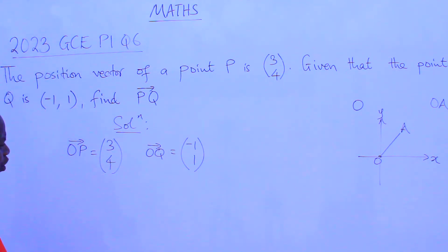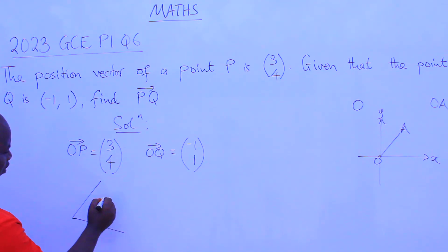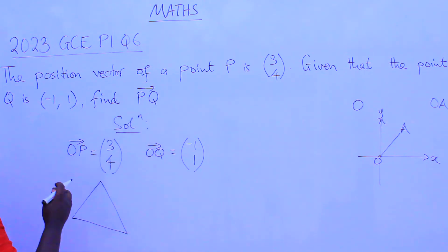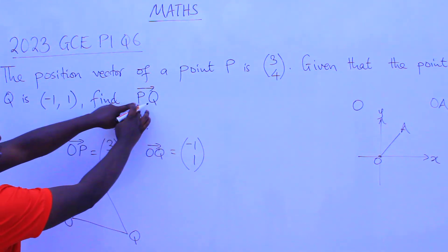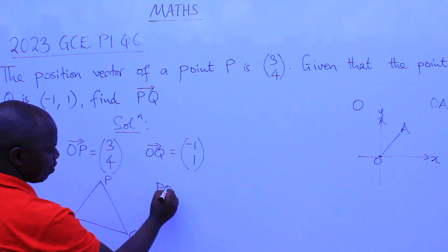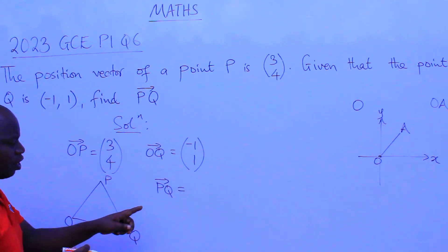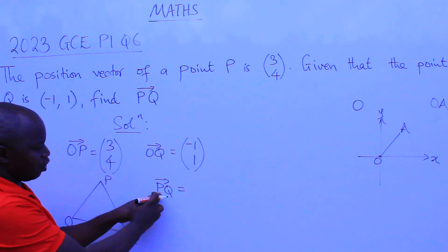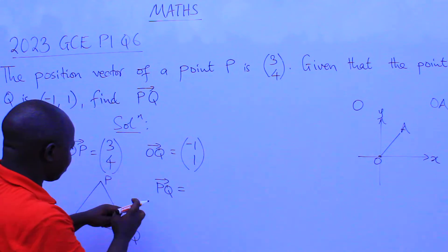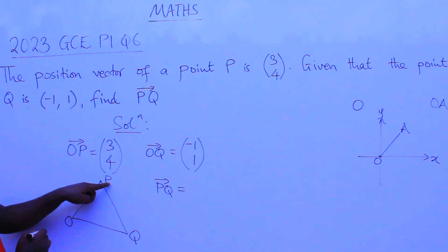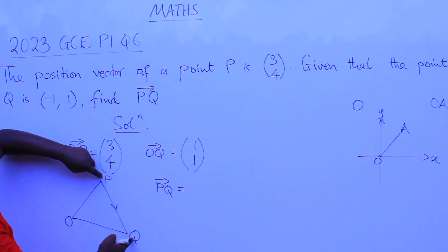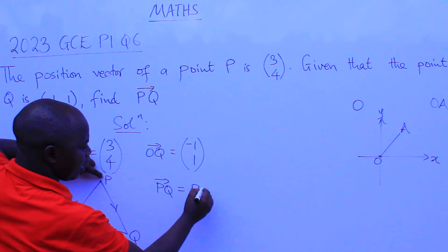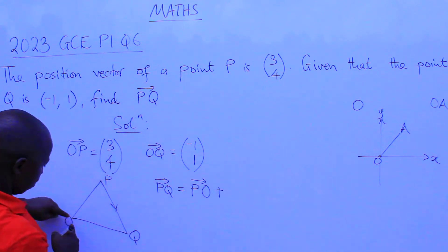The question is to find the vector PQ. Since the vectors are from the origin, they are position vectors. What you need to do is come up with a simple diagram to help you understand PQ. Let's say this is the origin O, we have point P here and point Q here. PQ is like standing on point P wanting to go to point Q. To move from P to Q, you say PO plus OQ.